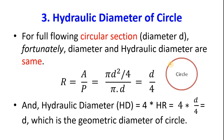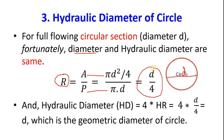For a full-flowing circular section, the geometric diameter and hydraulic diameter are the same. The hydraulic radius R equals A by P. Area is pi·d²/4 and perimeter is pi·d. After cancelling terms, we get d/4. Hydraulic diameter equals four times the hydraulic radius, so multiplying by 4 gives us d. Therefore, hydraulic diameter equals geometric diameter for a full-flowing circle.